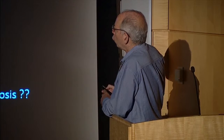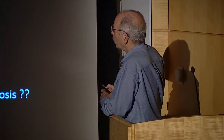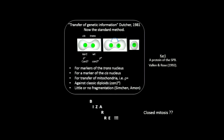What did she do? She was selecting for those events in which you would have progeny cells that would carry a marker of the trans nucleus and also a marker of the cis nucleus. She imposed a selection whereby these progeny would need to have acquired mitochondria from the cis cell. The cis cell was respiratory competent; the trans cell was respiratory incompetent. She selected, using classical approaches, against conventional diploid cells using the CAN1 mutation — a mutation that endows cells with resistance to canavanine.